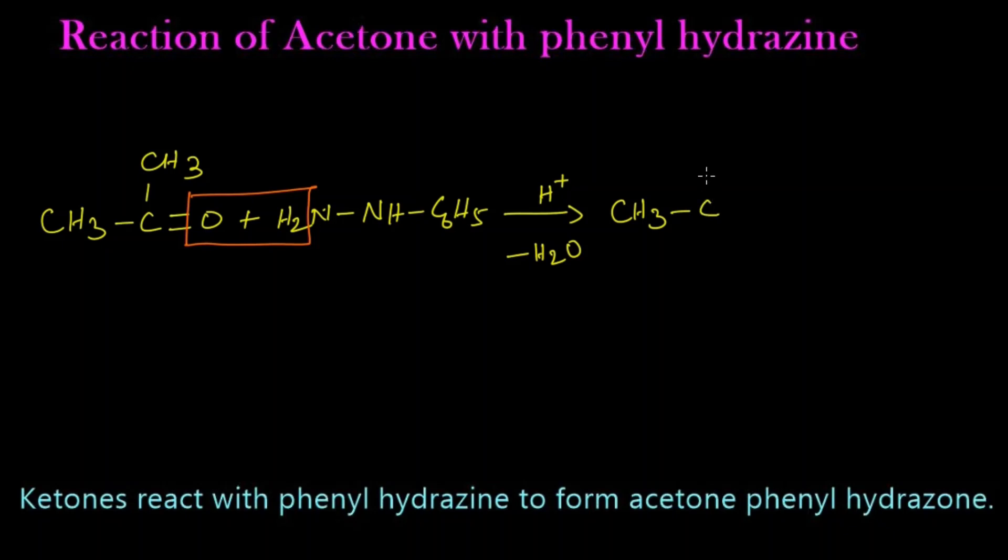CH3-C-CH3 double bond N single bond NH-C6H5. We get acetone phenylhydrazone. Let's write the name for these structures.